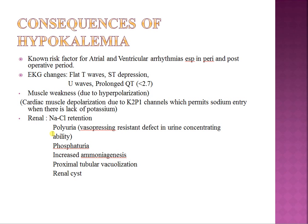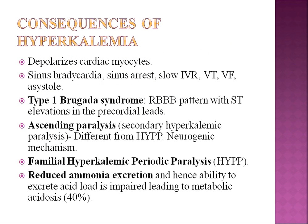Renal manifestations of chronic hypokalemia include sodium chloride retention and polyuria — seen in conditions like Bartter's and Gitelman's syndromes — due to a vasopressin-resistant defect in urinary concentrating ability. Other findings include phosphaturia, increased ammoniagenesis, and on biopsy, proximal tubular vacuolization and renal cyst formation, which can progress to end-stage renal disease in some patients.